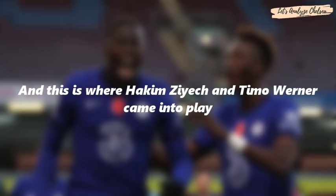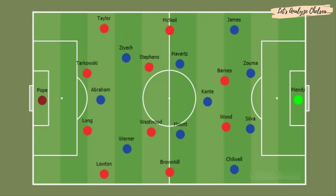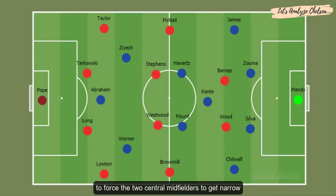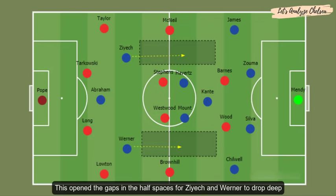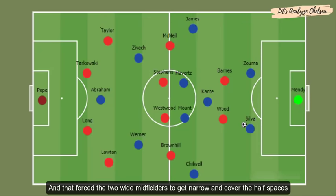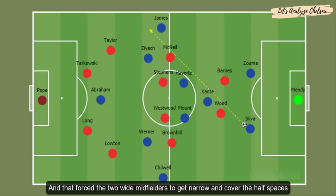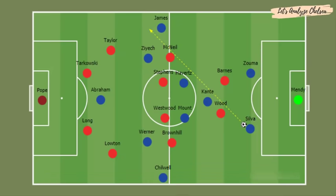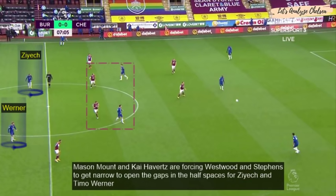This is where Hakim Ziyech and Timo Werner came into play. As the game progressed, Mason Mount and Kai Havertz started getting narrow to force Burnley's two central midfielders to get narrow as well. This opened gaps in the half-spaces for Hakim Ziyech and Timo Werner to drop deep and receive the ball from the centre-backs. Mason Mount and Kai Havertz are forcing Westwood and Stephens to get narrow to open the gaps in the half-spaces for Hakim Ziyech and Timo Werner.